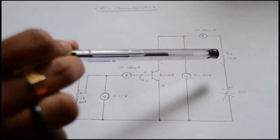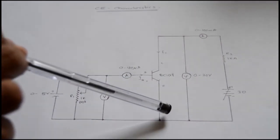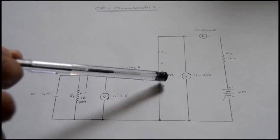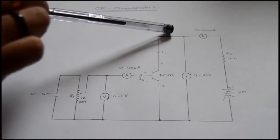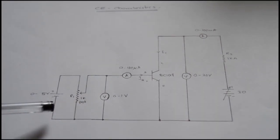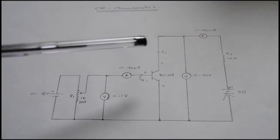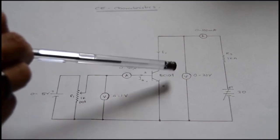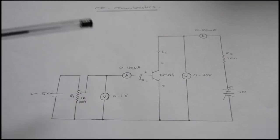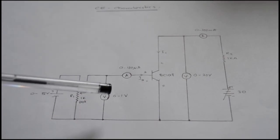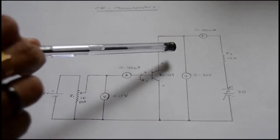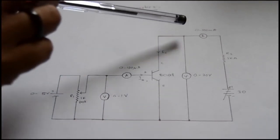The input voltage drop appears across this resistance and the remaining voltage drop appears across the collector-emitter terminal, which is measured using this voltmeter. This ammeter is used for measuring the collector current IC. For obtaining the input characteristics, the output voltage VCE is held constant, the input voltage VBE is varied, and the corresponding IB values are measured. For obtaining the output characteristics, the input current IB is held constant, the output voltage VCE is varied, and the corresponding IC values are noted down.